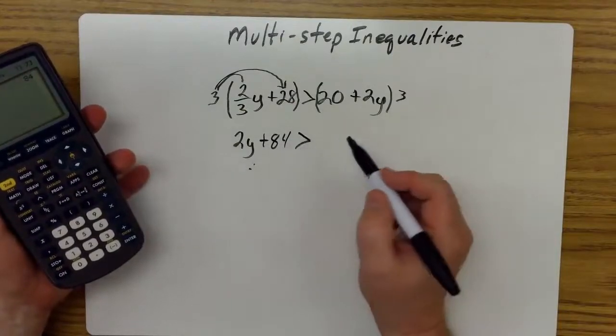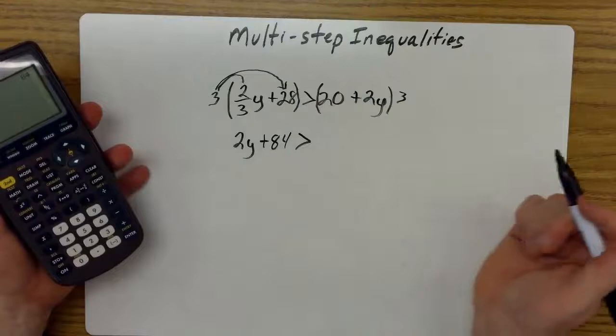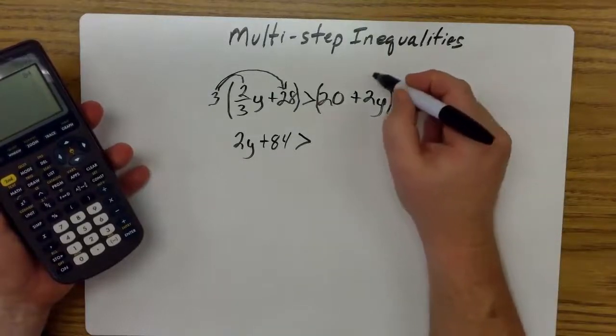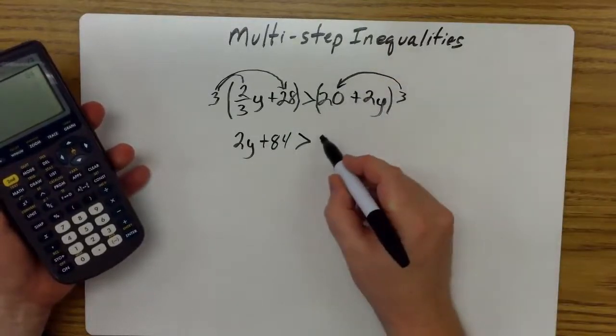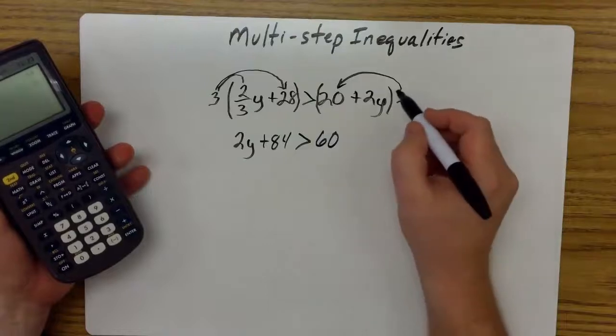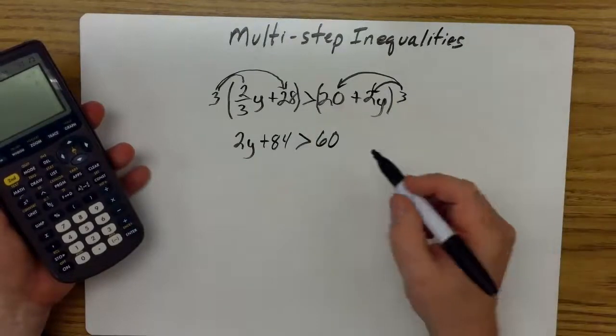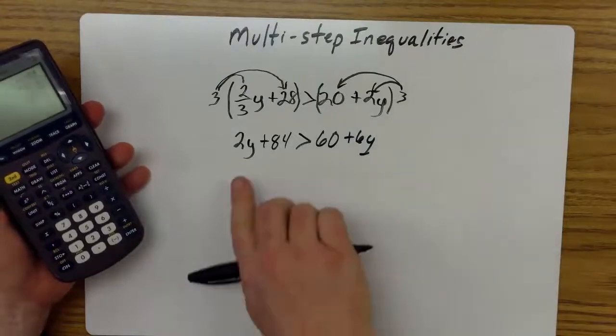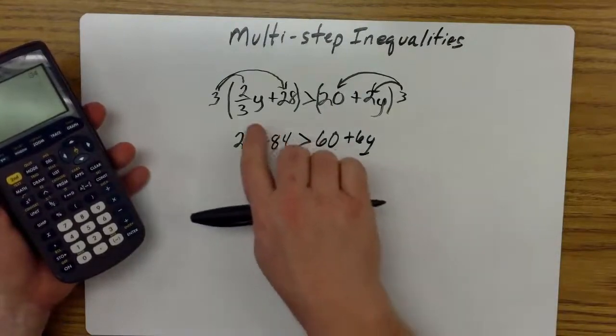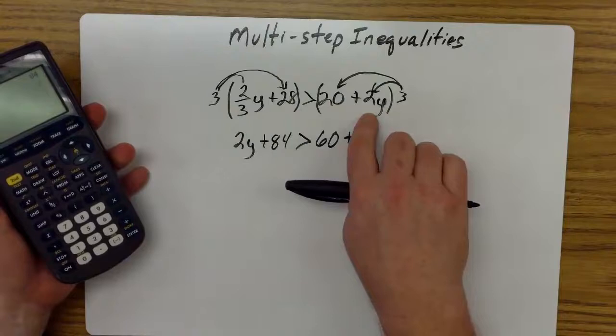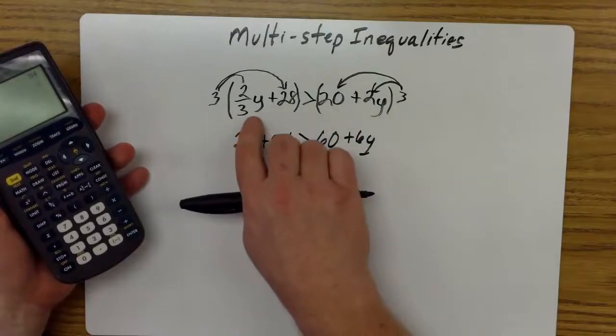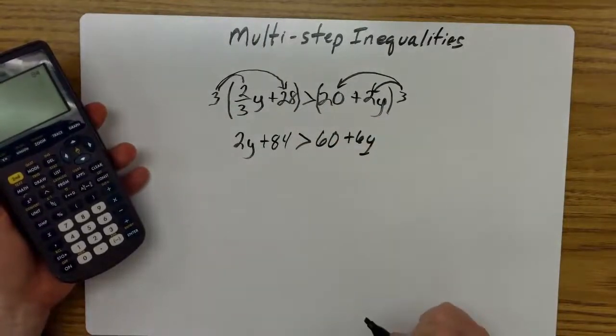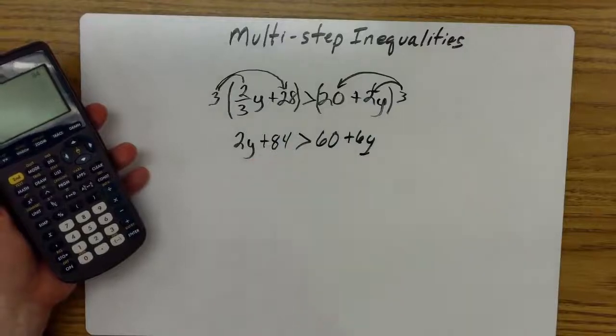So I have plus 84, still have a greater than symbol or opening towards the left. Then I'm going to distribute my 3 to the 20 here. 3 times 20 will give me 60, and 3 times the 2y will give me a positive 6y. So this inequality here, 2y + 84 > 60 + 6y, is still equivalent to the original problem. The only difference is I don't have the fraction. This is what we call clearing the fraction.